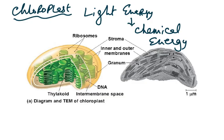A chloroplast also has DNA and ribosomes. Inside the chloroplast is a pigment called chlorophyll, which converts light energy into chemical energy. The process of photosynthesis takes place in the chloroplast and needs many enzymes — that is why it needs its own ribosomes and DNA to make those enzymes. This is a TEM (transmission electron micrograph) of a chloroplast alongside an artist's diagram of one.